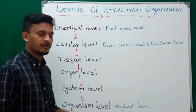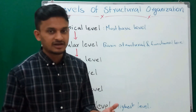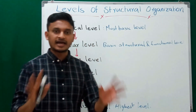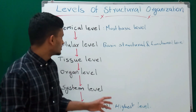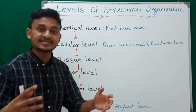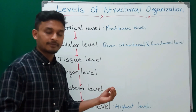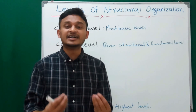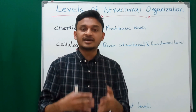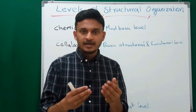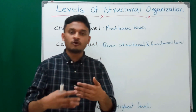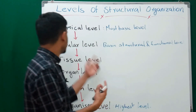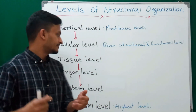The organism level is the highest level of organization — here, different organ systems are combined together and an organism is formed. To recap using the book analogy: the chemical level represents letters in a book. The cellular level represents words — letters combine together to form words.